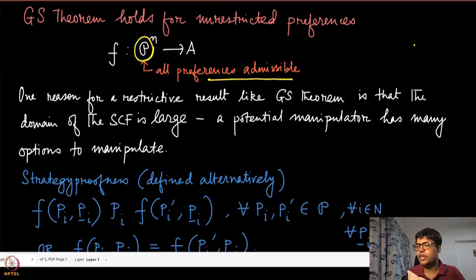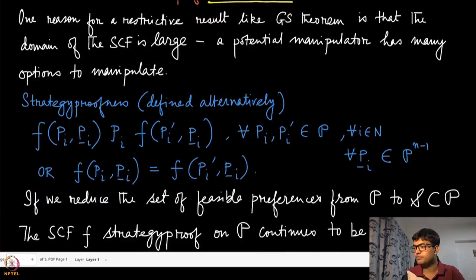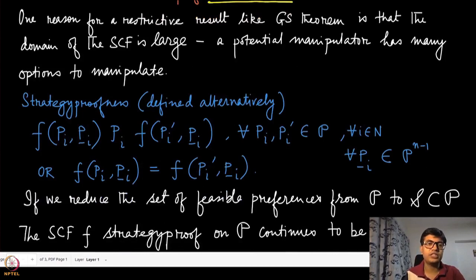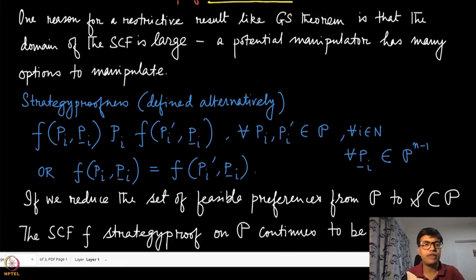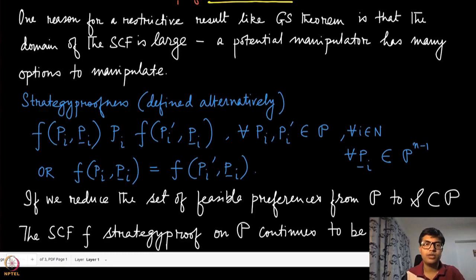An alternative way to write strategy-proofness is the following. We have defined strategy-proofness so far in terms of non-manipulability: if you can find a social choice function which is not manipulable, where we have defined manipulability formally, then we call that strategy-proof.